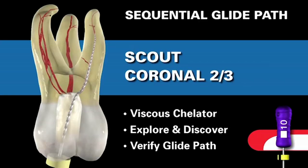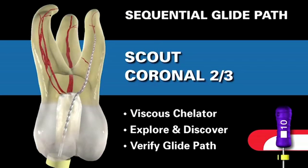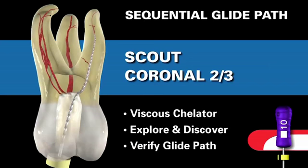The TIN file can be used to explore, discover, and negotiate a portion of the canal. Even in longer, narrower, and more curved canals, we can usually carry a TIN file about two-thirds of the overall expected working length. Once the TIN file is about two-thirds of the way in, move it in and out in little short amplitude strokes to verify a glide path in preparation for mechanical canal preparation. Any part of the canal that is secured can be shaped.